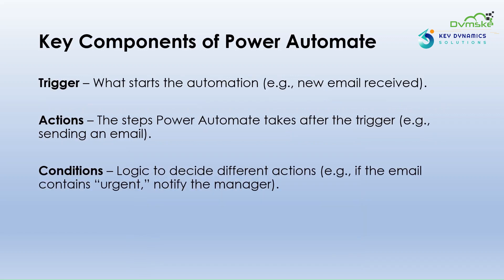The key components of Power Automate are triggers, actions and conditions. To build a flow, you need these three components. A trigger is the event that starts the automation — for example, receiving an email.